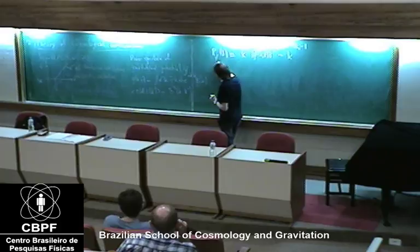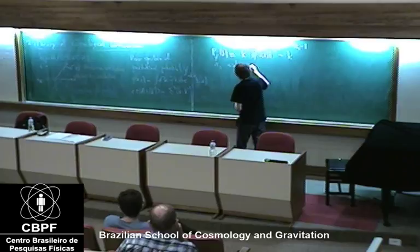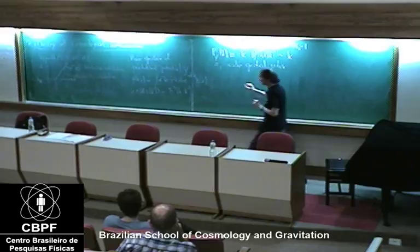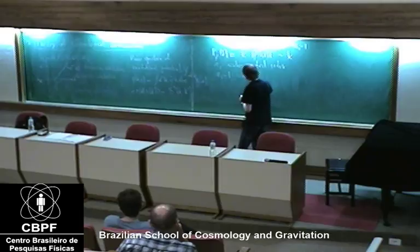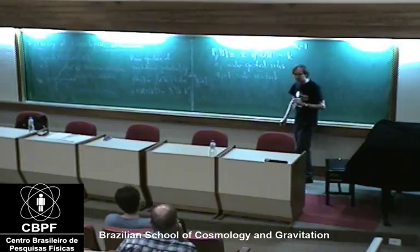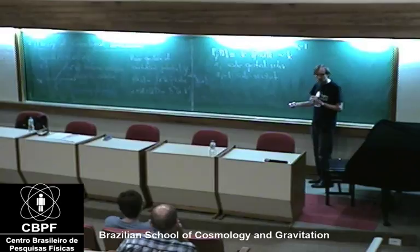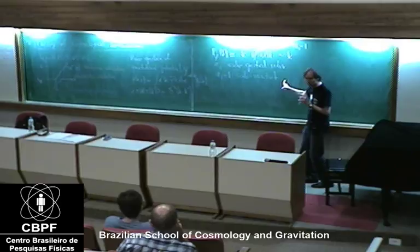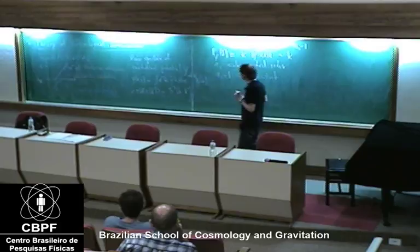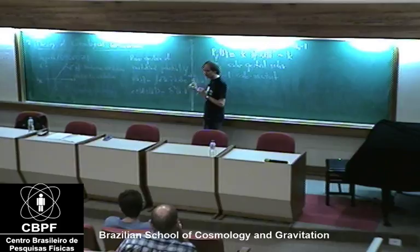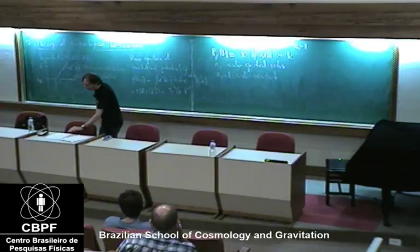N_S is called the scalar spectral index, and N_S equals 1 is called scale-invariant. Remember yesterday I mentioned the criteria for a successful early universe cosmology — the fourth criterion was scale-invariant, but I didn't specify what that was. Now I'm giving you the answer. Observations indicate that we need a scale-invariant spectrum for the curvature perturbations, which means for gravity.